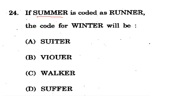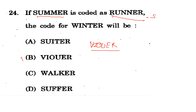Question 24: Summer is coded as 'runner.' What is the code for 'winter'? To decode: S→R (one letter back), U→V (one letter forward), M→M, M→N (one forward), E→? following the pattern, R→? The correct answer is option B. You can verify by applying the same encoding logic letter by letter to 'winter' to get the coded word.